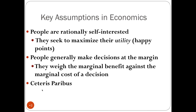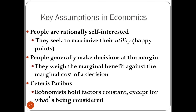We also talked about a very important assumption in economics, which is the ceteris paribus assumption — economists hold all factors constant except for what's being considered. For example, the law of demand might say that if the price of apples went down, ceteris paribus, the quantity demanded for those apples would go up. We're holding every factor constant that would affect the quantity demanded of apples besides price. All other things being equal — that is the ceteris paribus assumption. It simplifies analysis and allows you to see the relationship between variables.